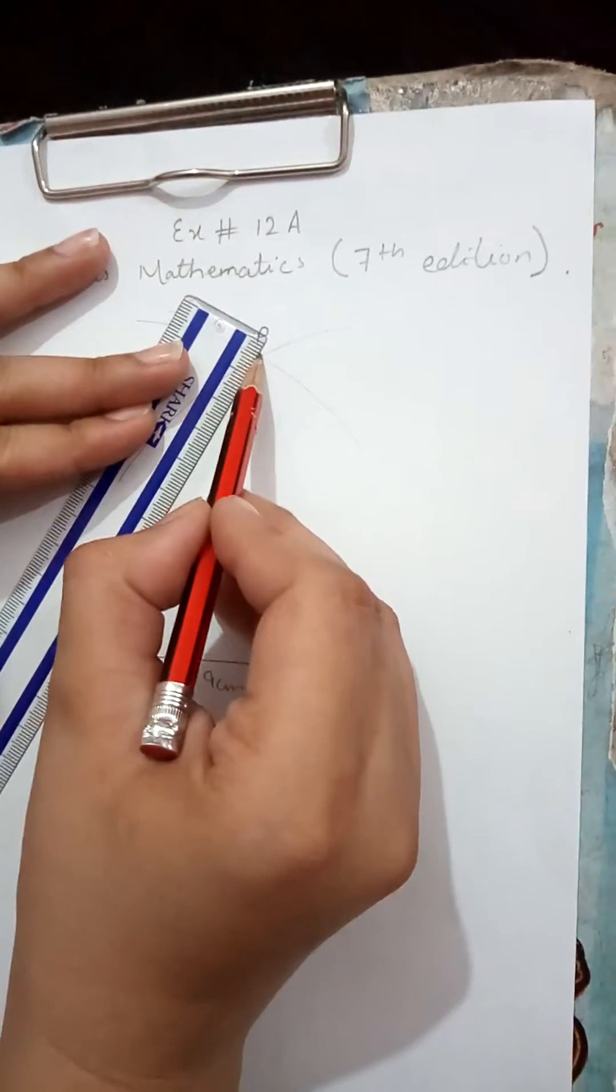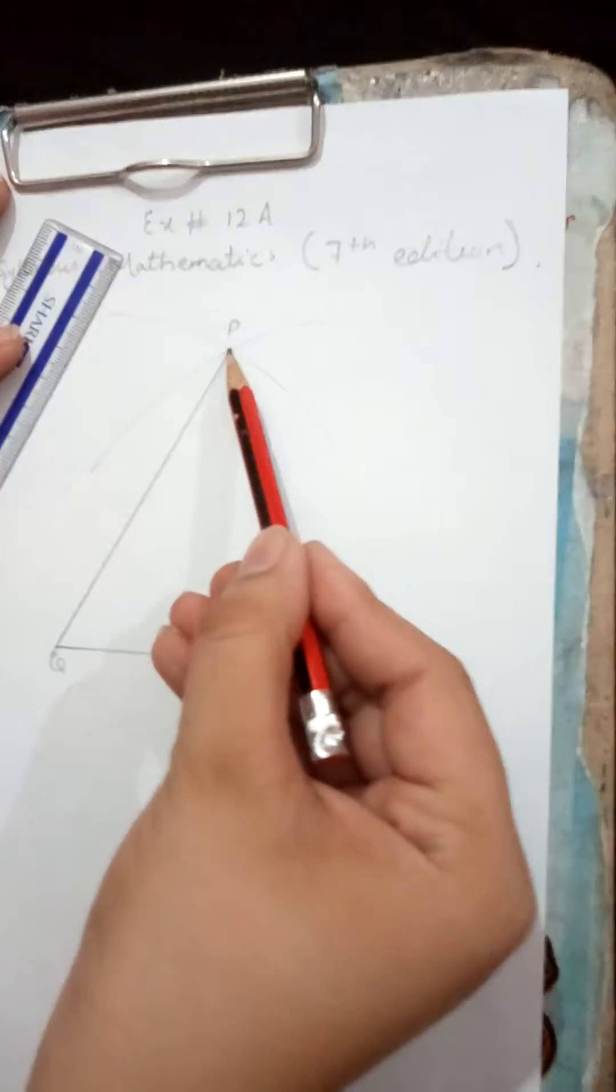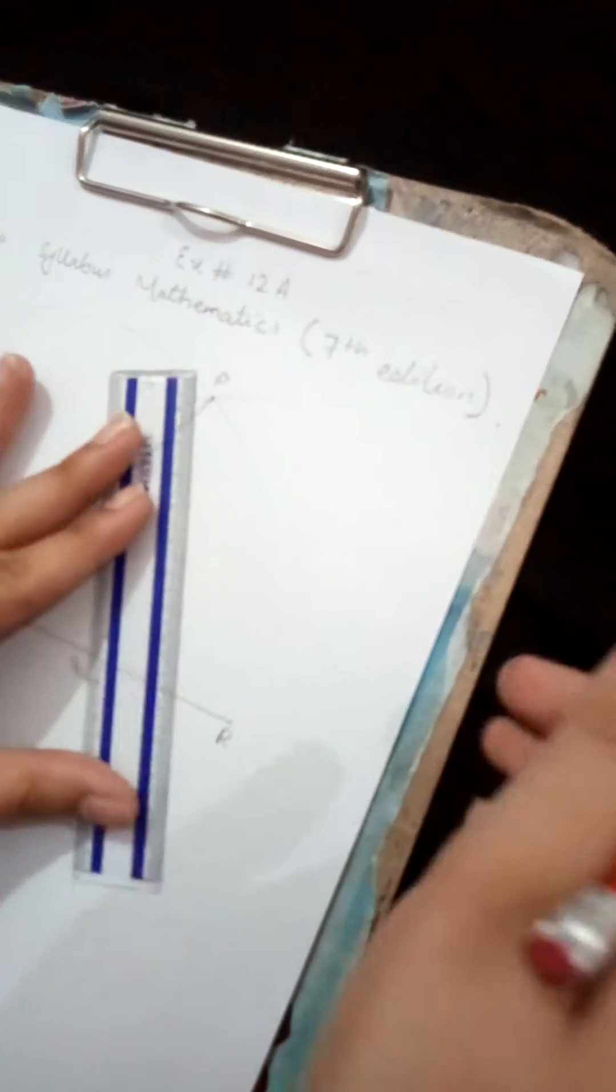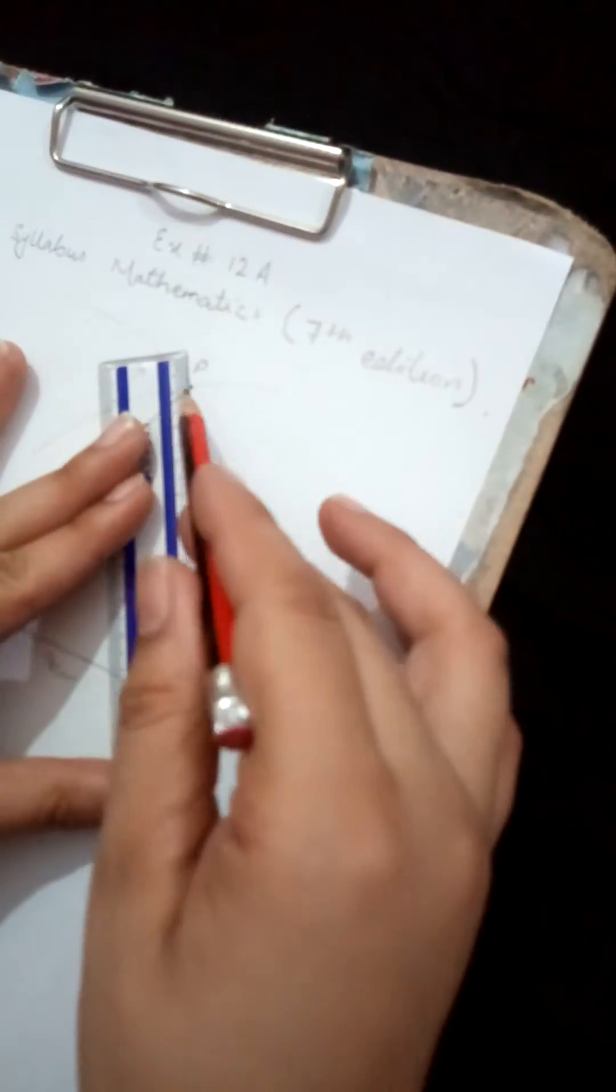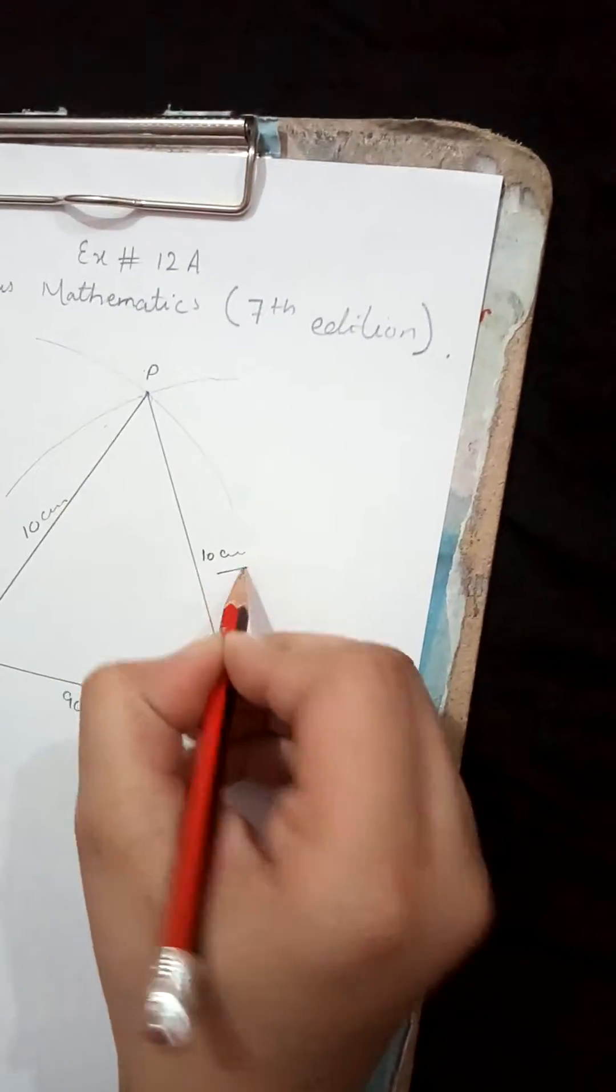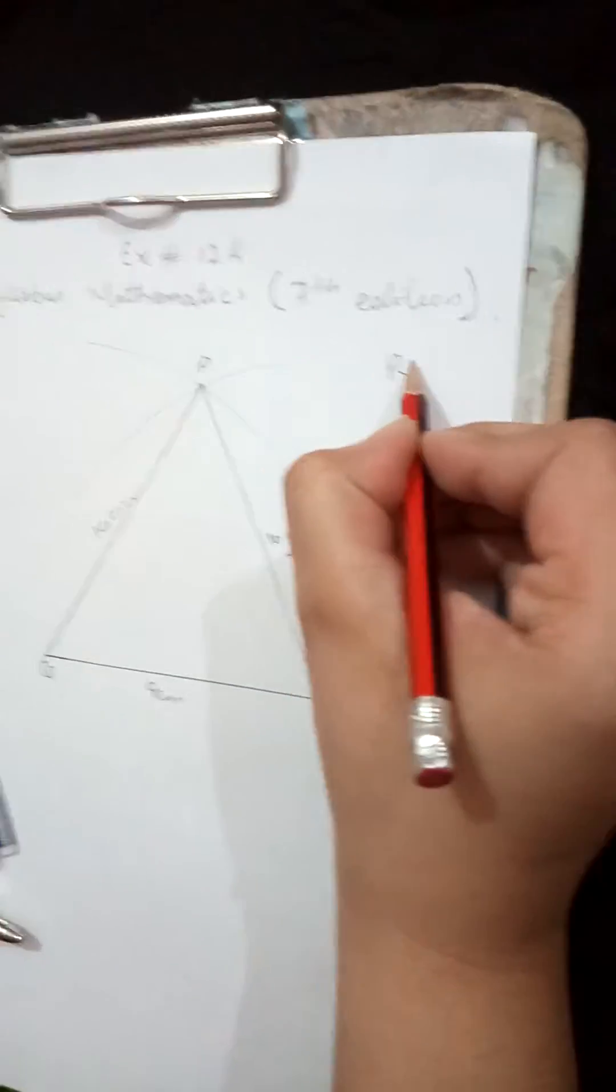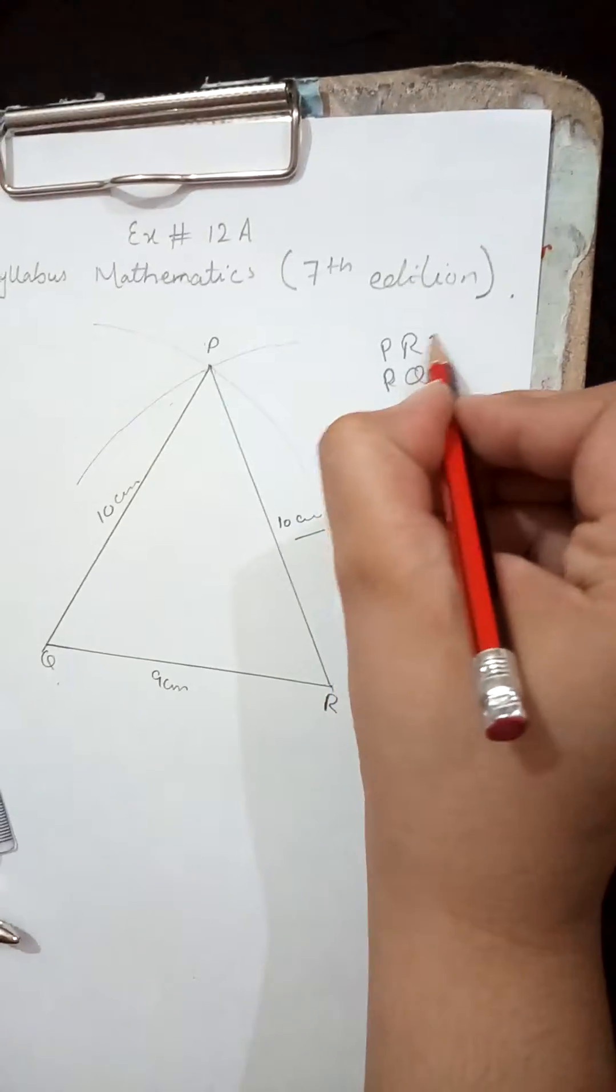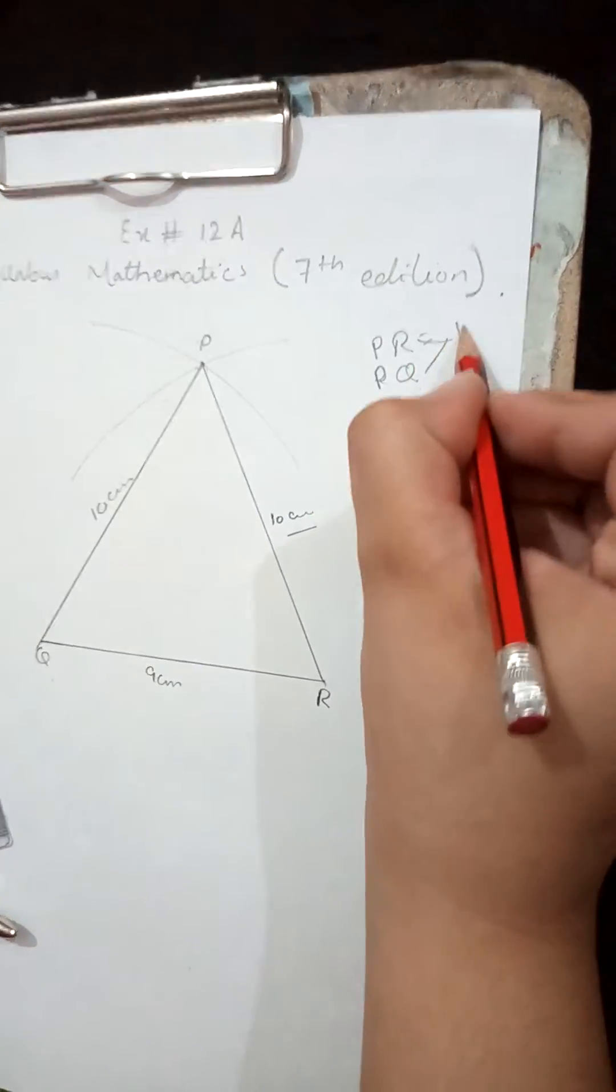Now joining this point P with Q and making a line segment PQ that is 10 centimeters, and PR that is also 10 centimeters. I repeat: PR and PQ, these two lines are 10 centimeters as given in the question.